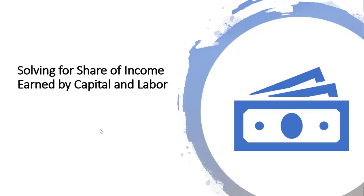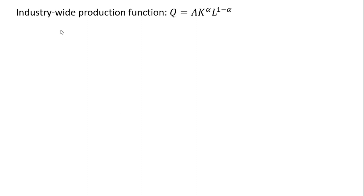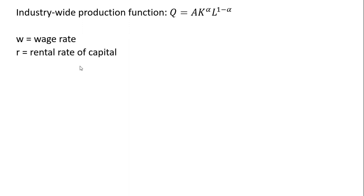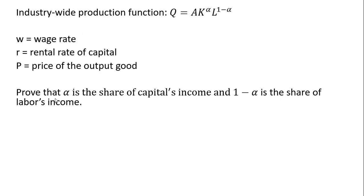In this video, we're going to solve for the share of income earned by capital and labor. We have an industry or economy-wide production function. Q is the output, and we've got units of capital and units of labor. W is the wage rate, R is the rental rate or price of capital, and P is the price of the output good Q. We want to prove that alpha is the share of capital's income, and 1 minus alpha — the exponent on the L term — is the share of labor's income.